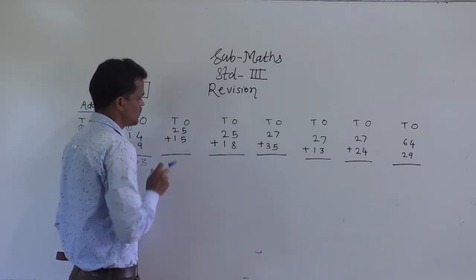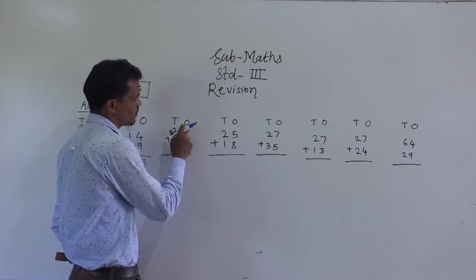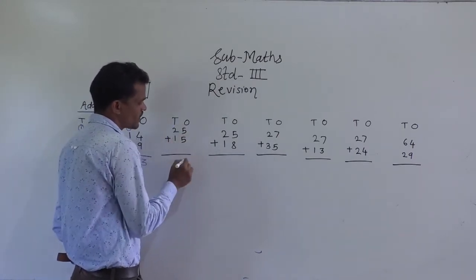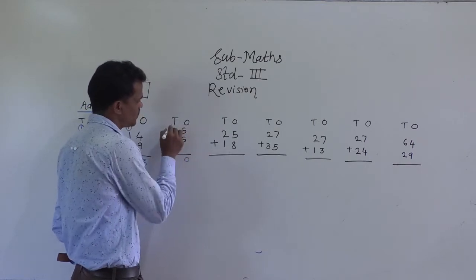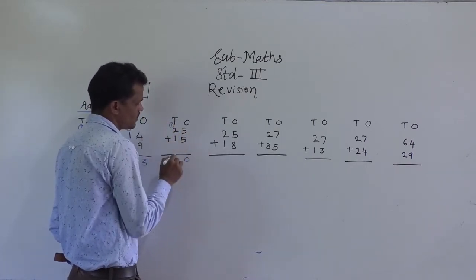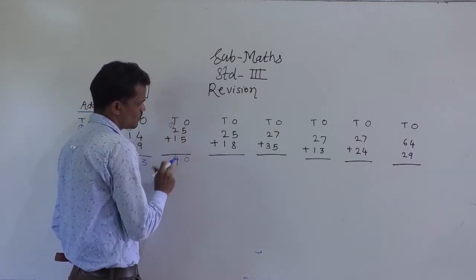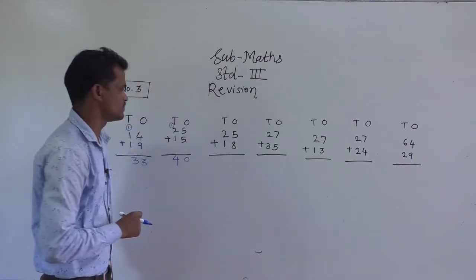Next example: 25 plus 15. 5 plus 5 is 10, so write 0 here and carry 1. 2 plus 1 is 3, plus 1 carry is 4. So 40 is the sum.